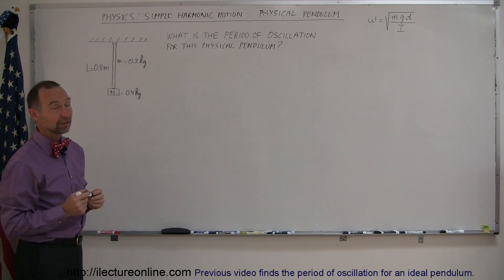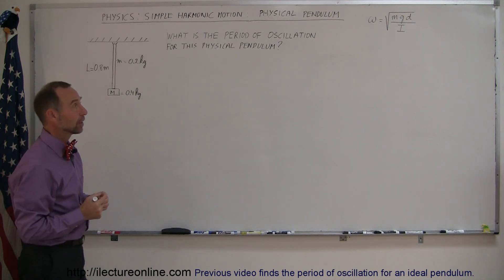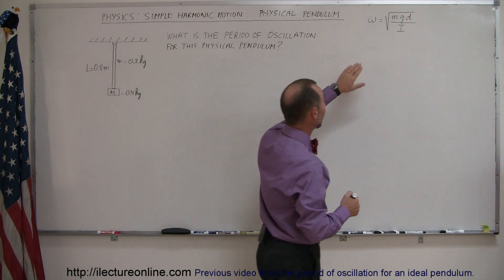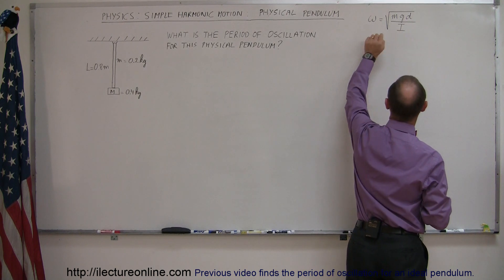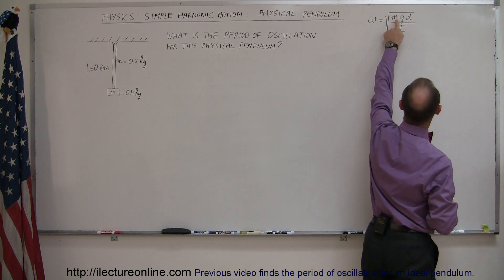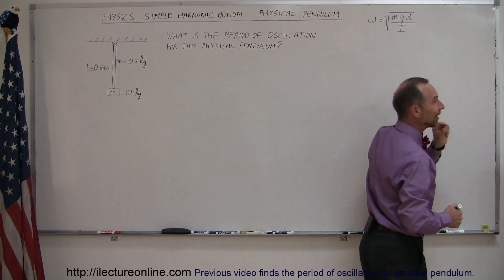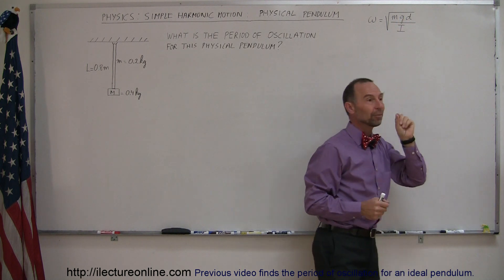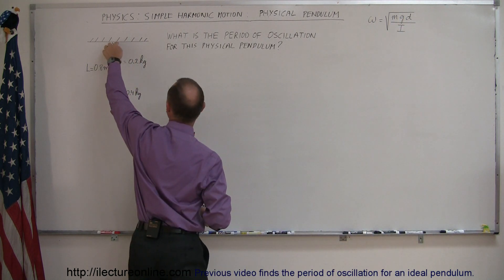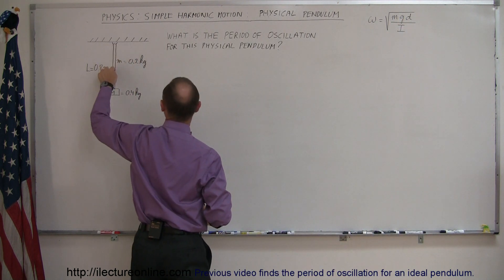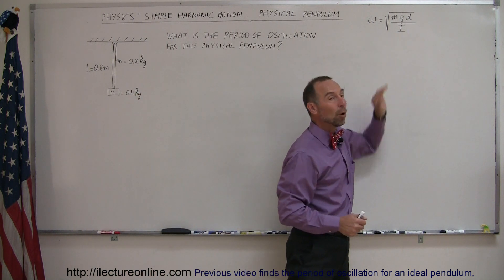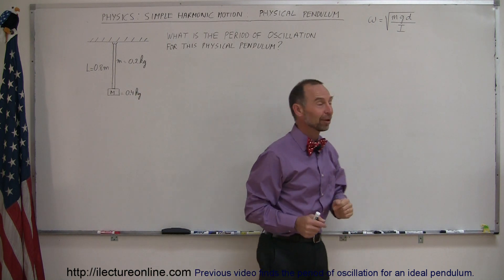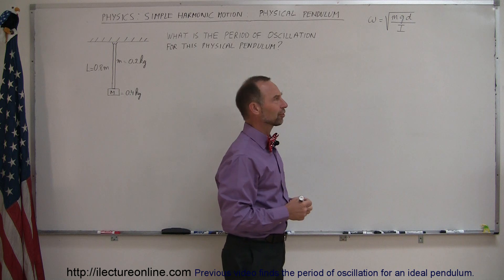That's the equation for the oscillation frequency. To find the oscillation frequency in radians per second, we need to know the mass of the pendulum, the acceleration due to gravity, and the distance from where the pendulum is held to the center of mass. Then we divide that by the moment of inertia of the pendulum. There are several things we need to work out first.